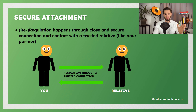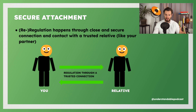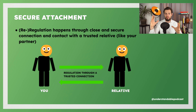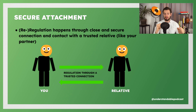Let's start with the secure attachment. The secure type makes up around 58 to 60% of the population — so most of us are fine. People of this type are usually described as emotionally open and stable. They're able to express emotions, communicate their needs, and set healthy boundaries.